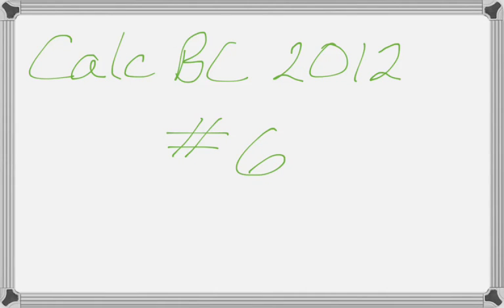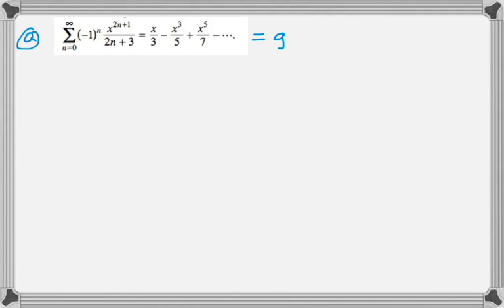Alright, this is going to be number 6 from the 2012 BC Calculus exam, and it is a series question. In the first part, we are given this function, which is g of x, and we're asked to find the interval of convergence, which means we've got to use the ratio test. You're actually explicitly told to use the ratio test.